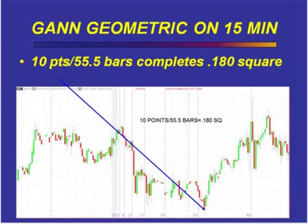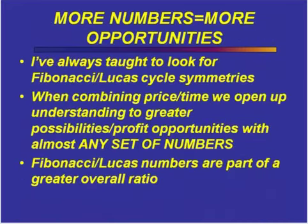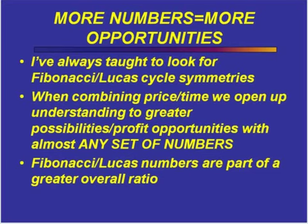Here's some more Russell 2000 work on a 15-minute chart. You take 10 points and 55.5 bars, do the math, and you'll find that for this complete move each bar completes at 0.180 points per bar — and that's where that move completed. In the first book, we were discussing Fibonacci windows — 55s, 144s, and 233s. When we break down the symmetry and the ratio, you'll find that you can find opportunity in just about any set of numbers. The best opportunities do present themselves in Fibonacci and geometric GAN type numbers.